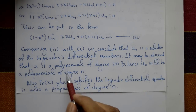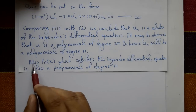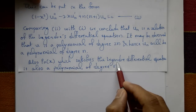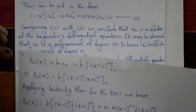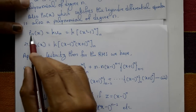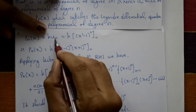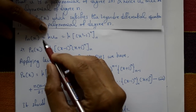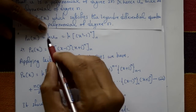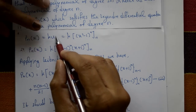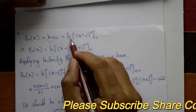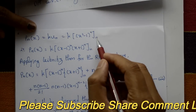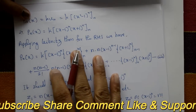It may be observed that u is a polynomial of degree 2n, and hence u_n will be a polynomial of degree n. Also, P_n(x), which satisfies the Legendre differential equation, is also a polynomial of degree n. Therefore P_n(x) = k · u_n for some constant factor k.